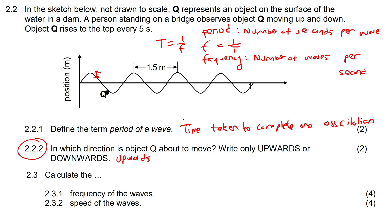Okay, now we're going to get into some calculations. So it says calculate the frequency of the waves. So it tells us that object Q rises to the top every five seconds. So that means that there is one wave every five seconds, that is the period. So we can say that the period is five. But we know that frequency is one over that. So frequency is one over the period. And so frequency is going to be one over five, which is 0.2 hertz.